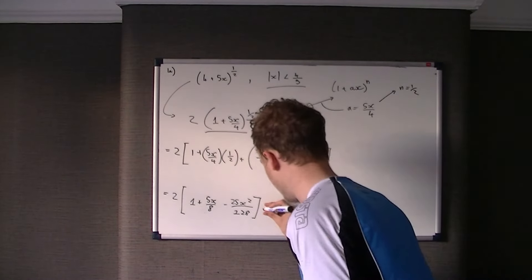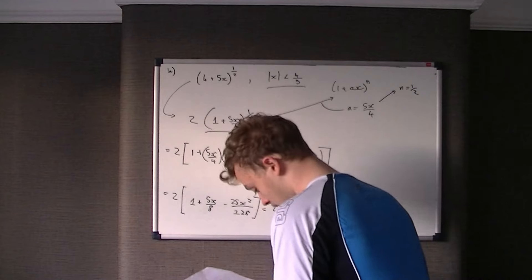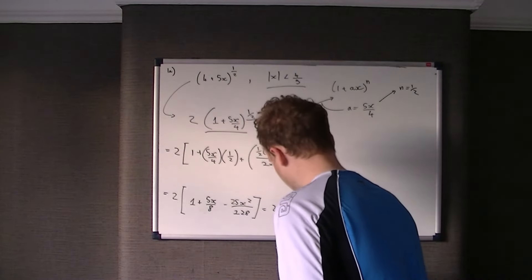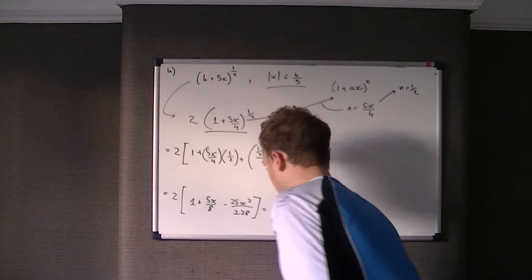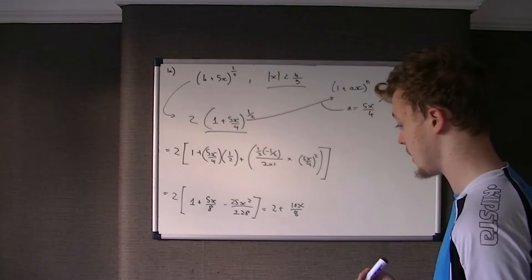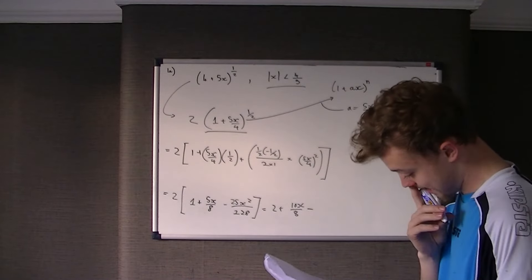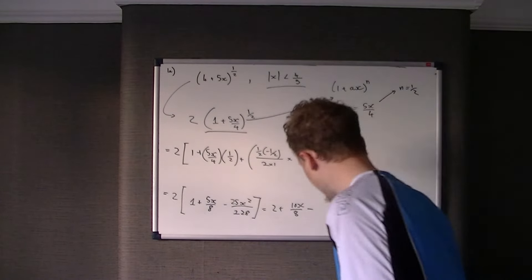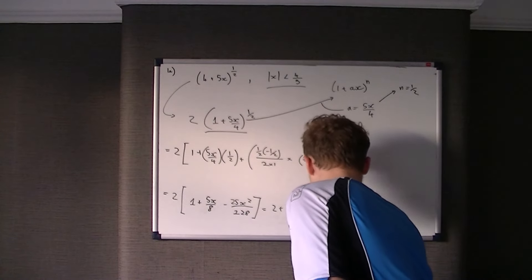Now we multiply each term by 2, which gives 2 plus 10x over 8, then 2 times 25x squared over 128, giving minus 50x squared over 128.